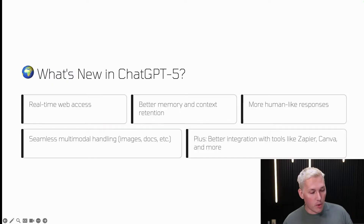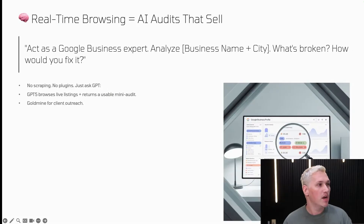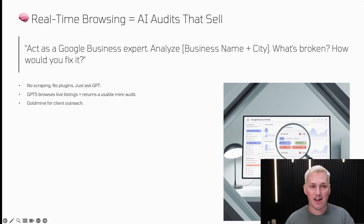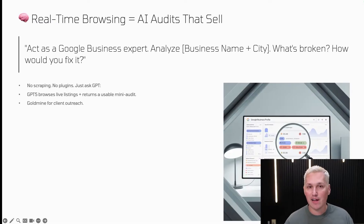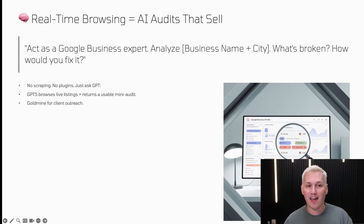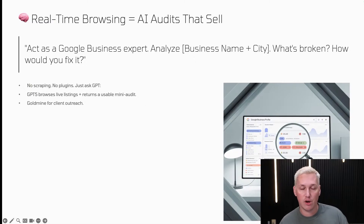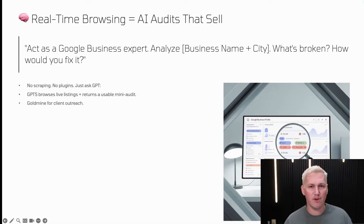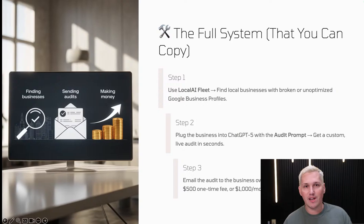I've already gone in and started testing things out. One of the cool ways I've been using it is to run real-time AI audits that you can sell. You ask ChatGPT5 to act as a Google business expert, analyze a business, give it the city name, find what's broken, and how to fix it. No plugins needed — it browses live listings and returns a usable mini audit. This is a goldmine for client outreach and it works in pretty much any industry.